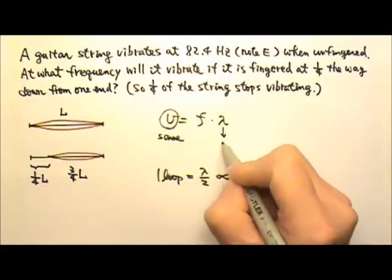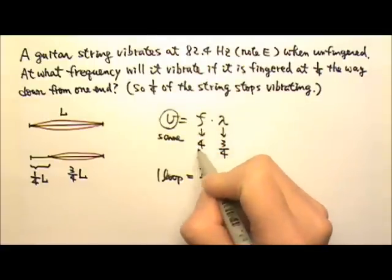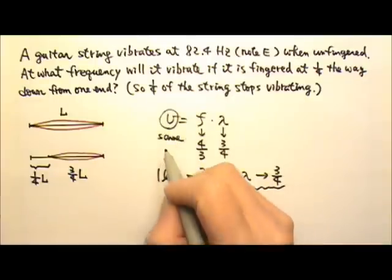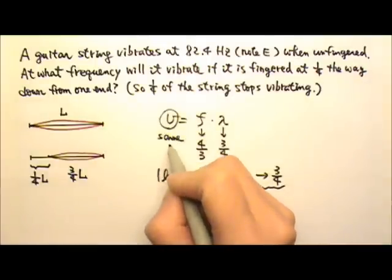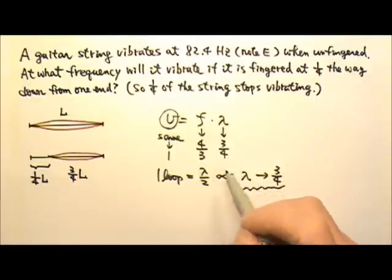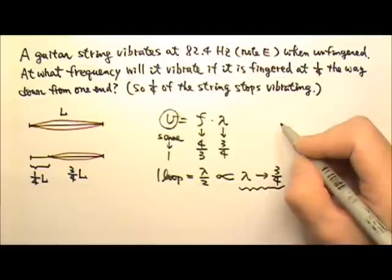If the wavelength changes by a factor of three-fourths, the frequency will have to change by a factor of four-thirds in order to keep the speed the same. Because staying the same means it changes by a factor of one. And four-thirds times three-fourths is one. So the frequency changes by a factor of four-thirds.